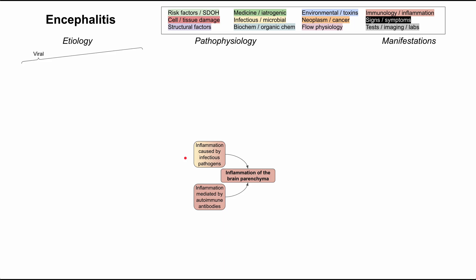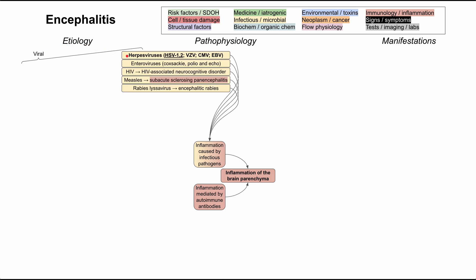All types of pathogens can cause encephalitis, but the most common are viral etiologies, which take up the top half of the etiology section. The most common viruses to cause encephalitis are herpes viruses — this includes herpes simplex 1 and 2, varicella zoster virus, cytomegalovirus, and Epstein-Barr virus. Herpes simplex 1 and 2 are the most common causes of encephalitis, and herpes viruses as a whole are the most common family causing infectious encephalitis.